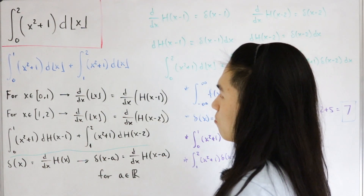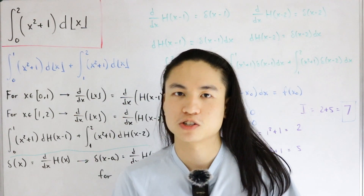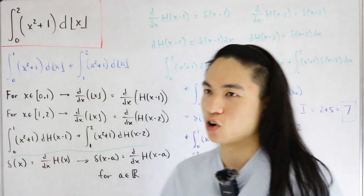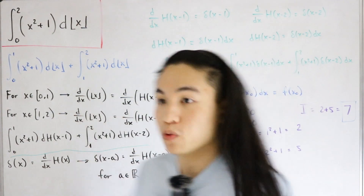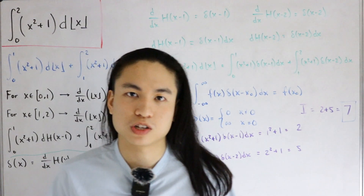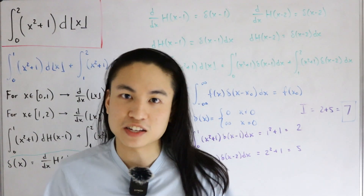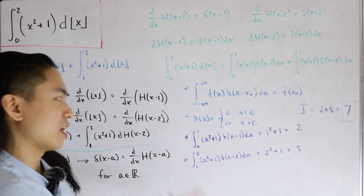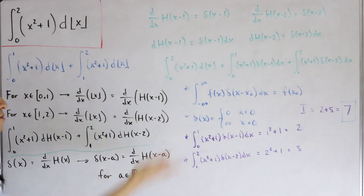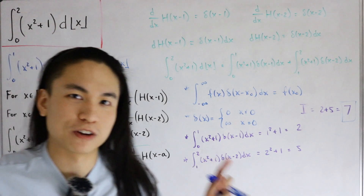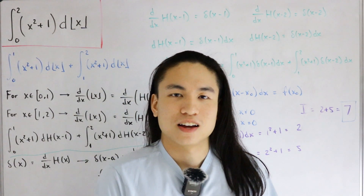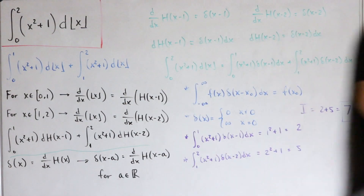There are two ways to do this: use the Riemann-Stieltjes integral if you want the easy route, or — for a more challenging and fun experience — use Heaviside functions and the Dirac delta, drawing everything from the world of physics. That's pretty cool if you ask me.